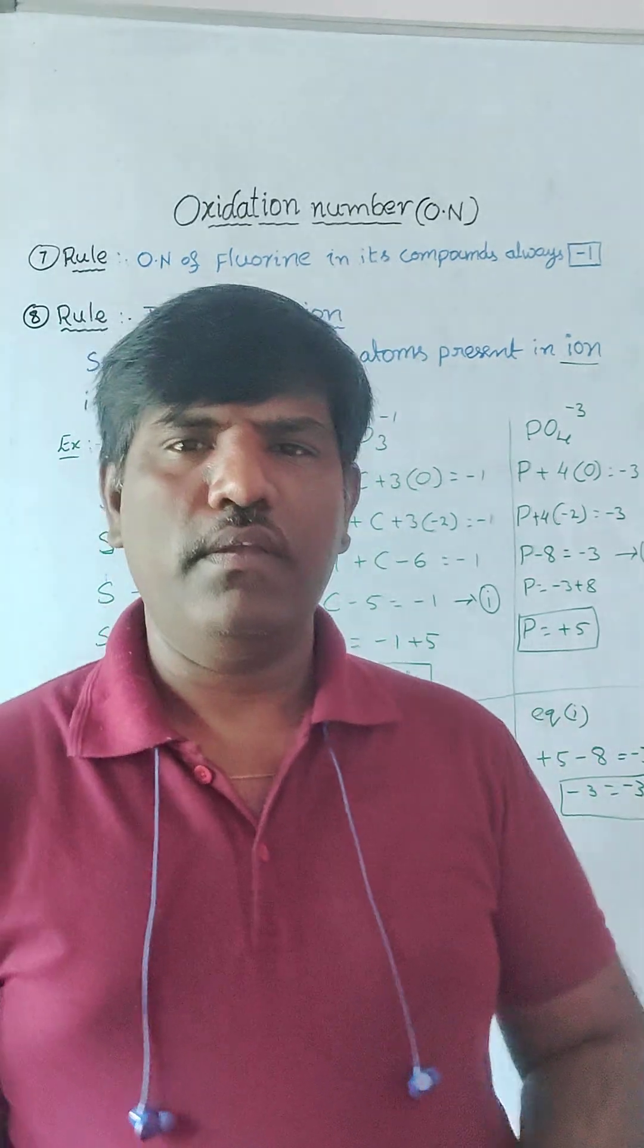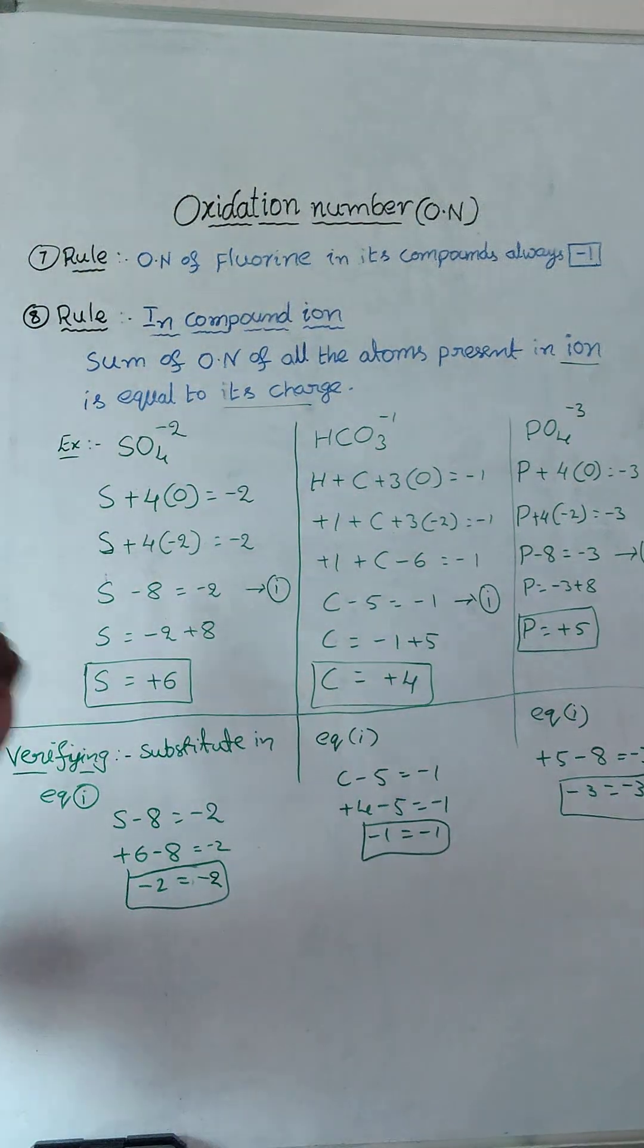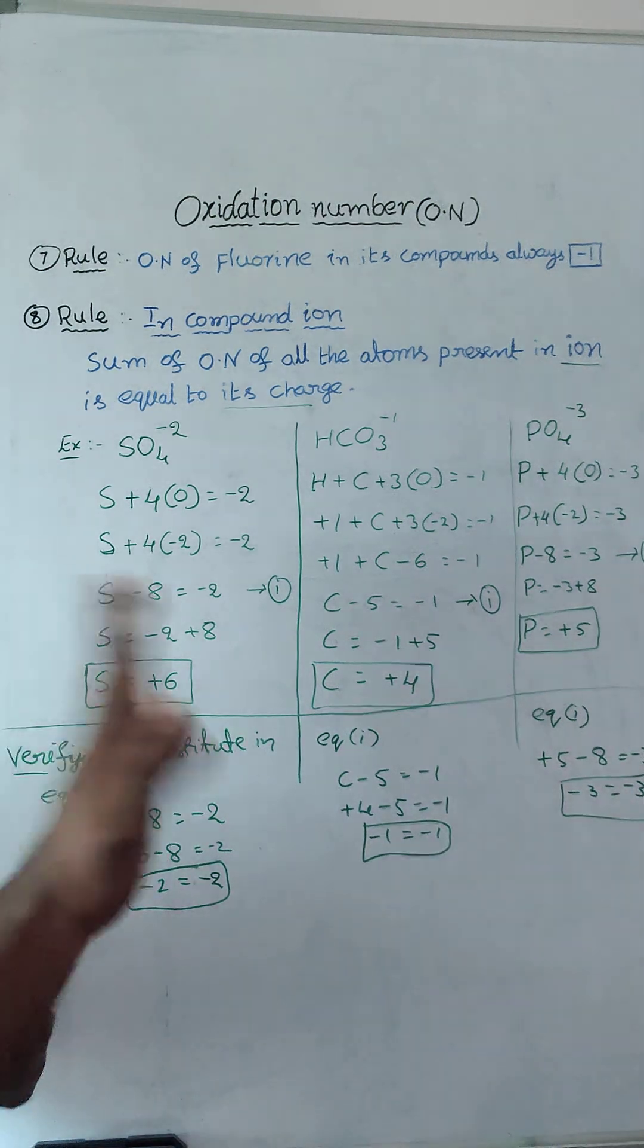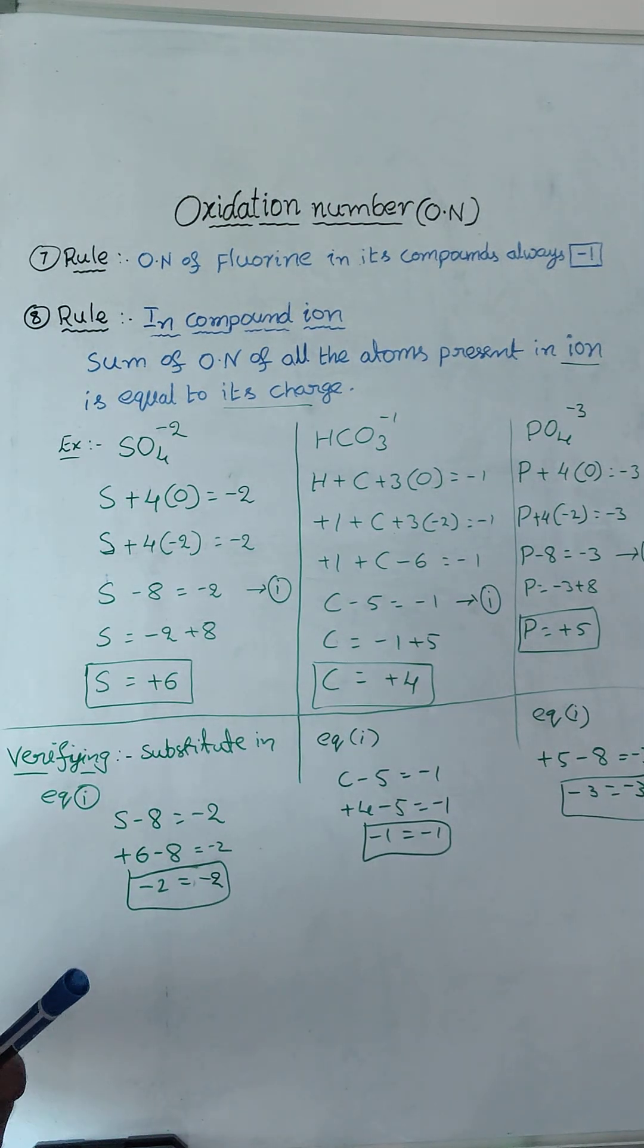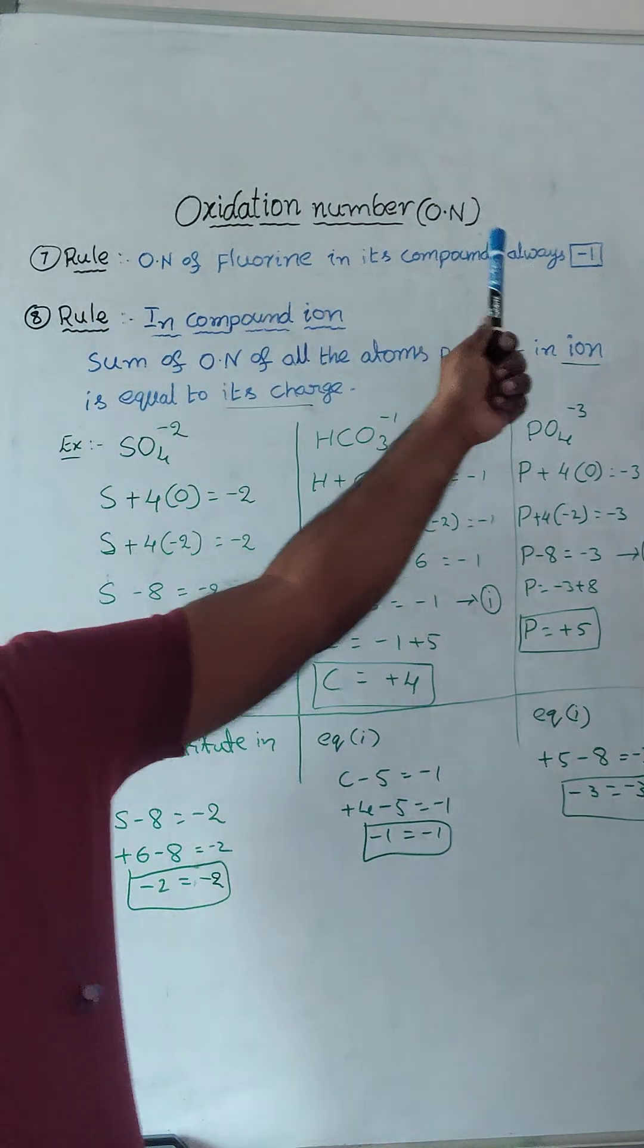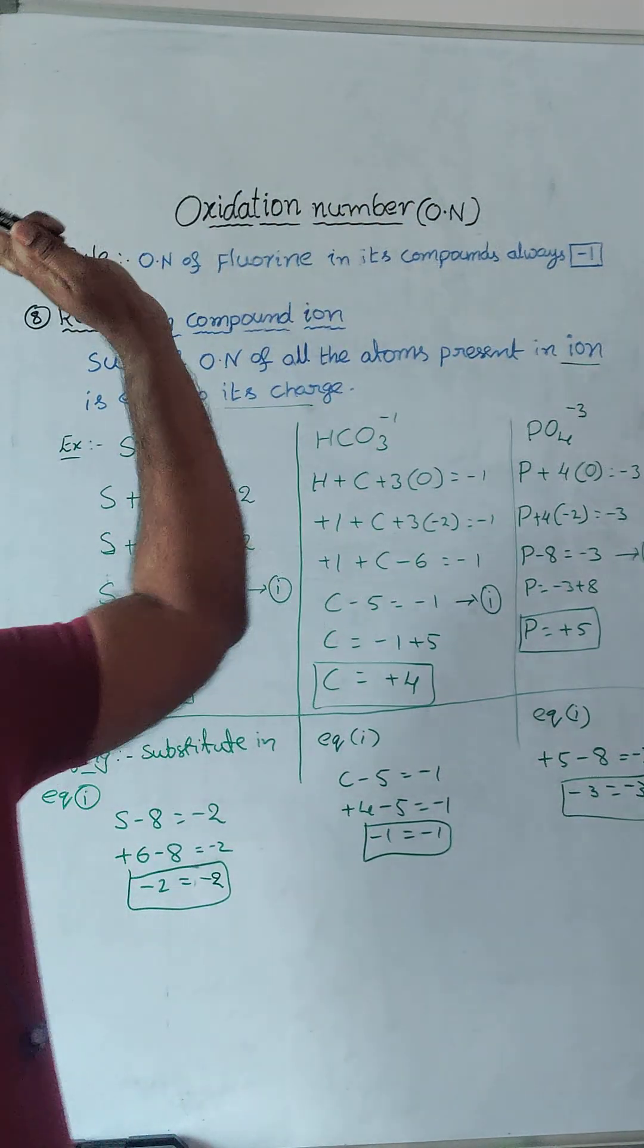Rule number 7: oxidation number of fluorine in its compounds always minus 1, because fluorine is highest electronegative element in the periodic table. So its oxidation number always minus 1, no change.